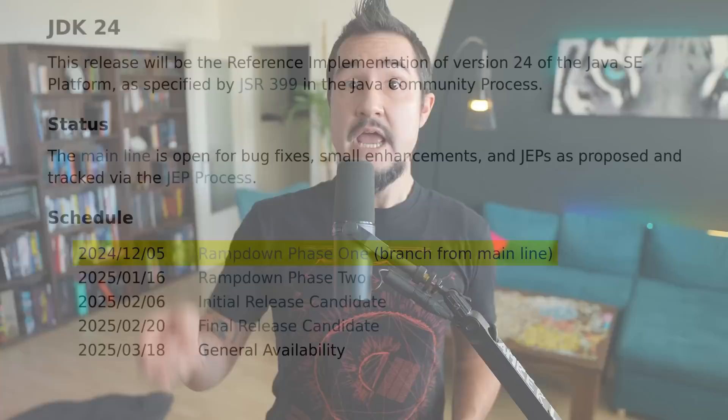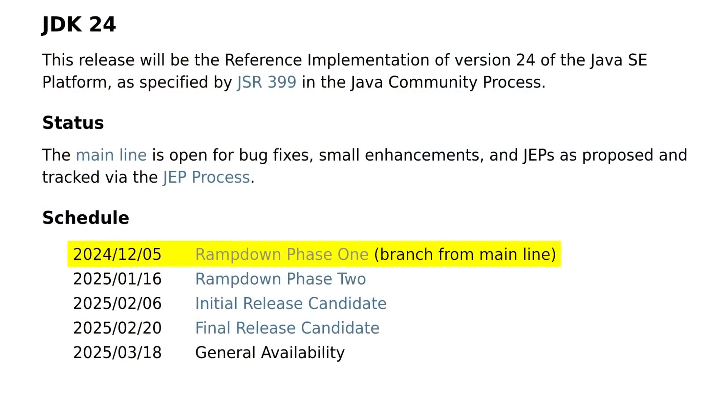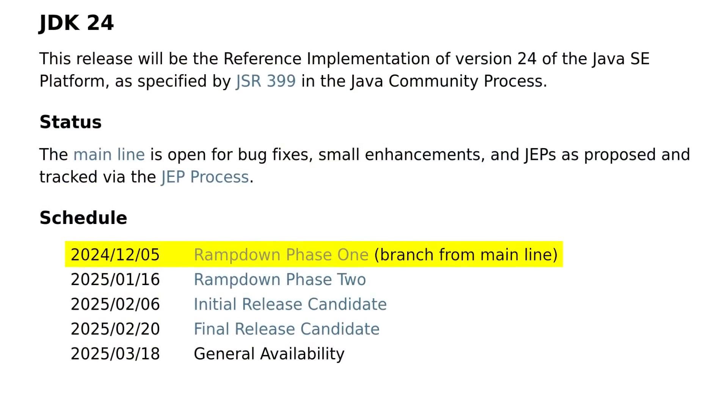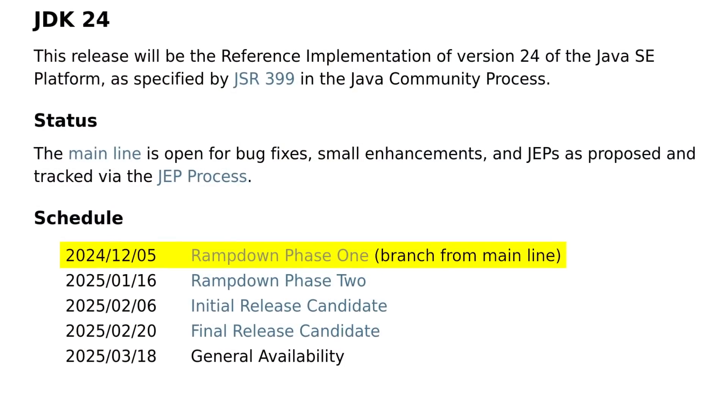Never say never, I guess, but it's surely not going to happen soon. Talking about soon — in two weeks, JDK 24 will enter Rampdown Phase 1, which means its feature set will be frozen. I'll see you then, so we can go over everything that made it — and it's a lot. So long!